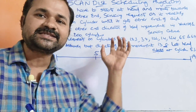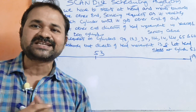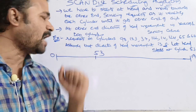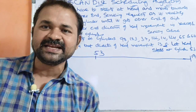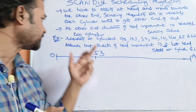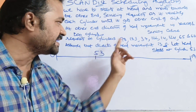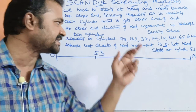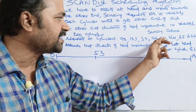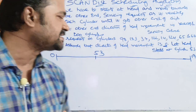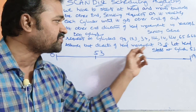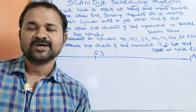Let us discuss the SCAN disk scheduling algorithm with an example. We have 200 cylinders, numbered 0 to 199. The requests are on cylinders: 98, 183, 37, 122, 14, 124, 65, and 67. Assume that the direction of head movement is toward 0 (the start end).